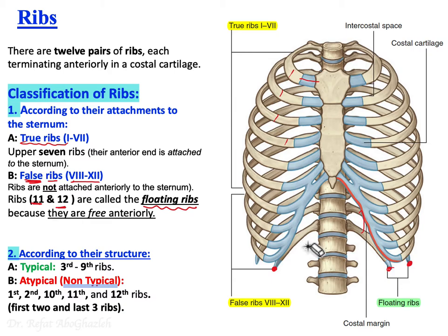Ribs 8, 9, and 10 do not attach directly to the sternum. Instead, their costal cartilages unite with each other and then join the costal cartilage of rib 7, which itself attaches directly to the sternum.